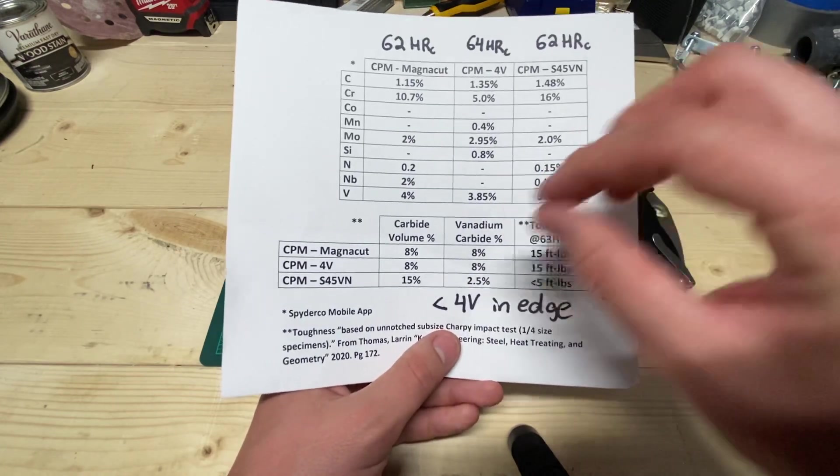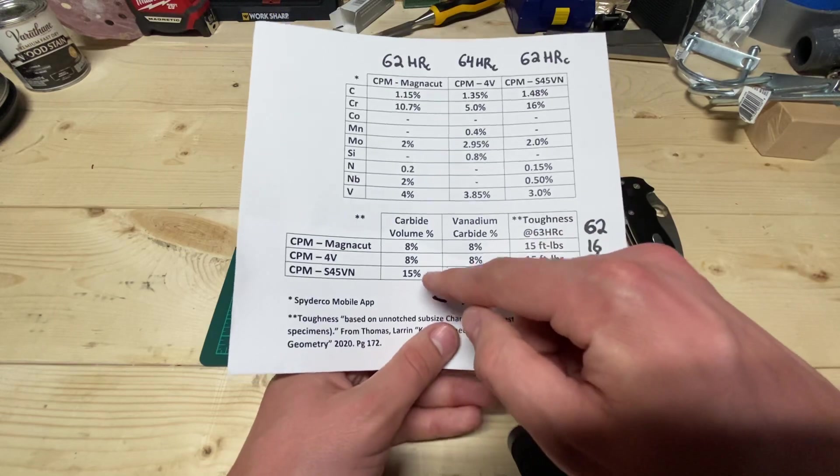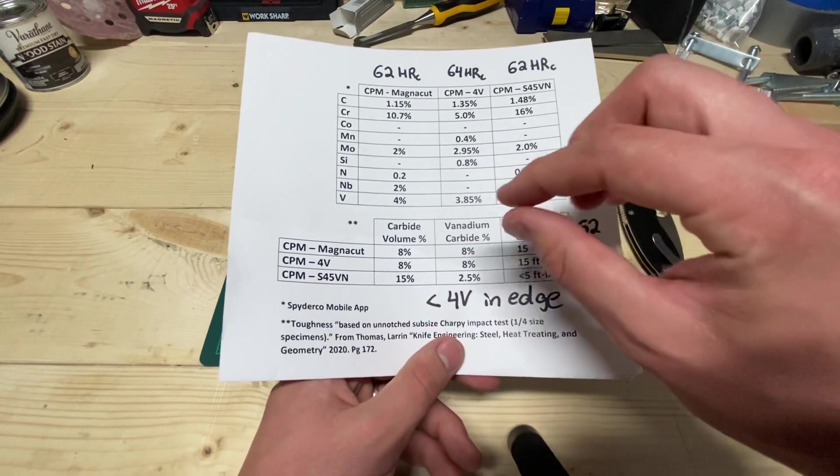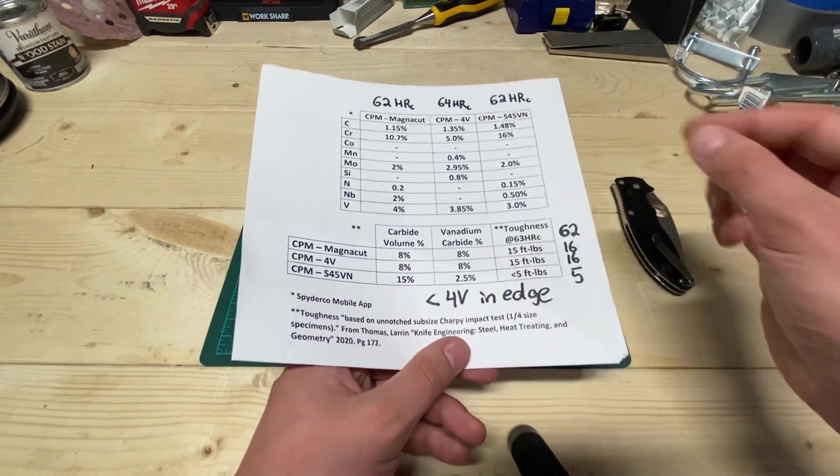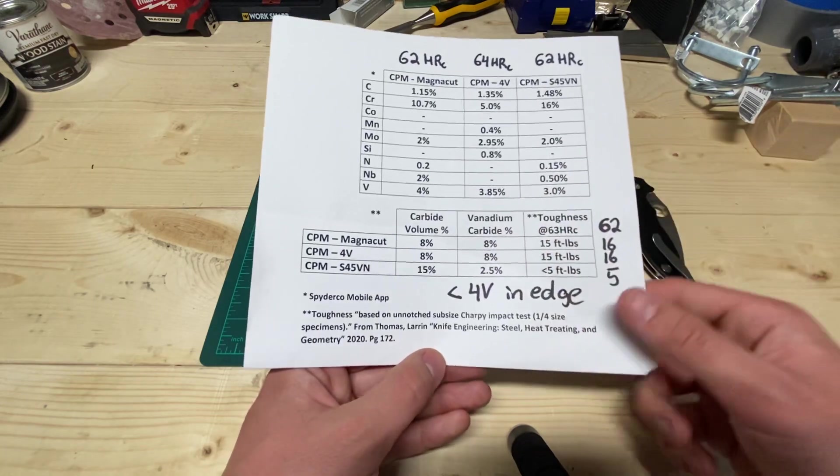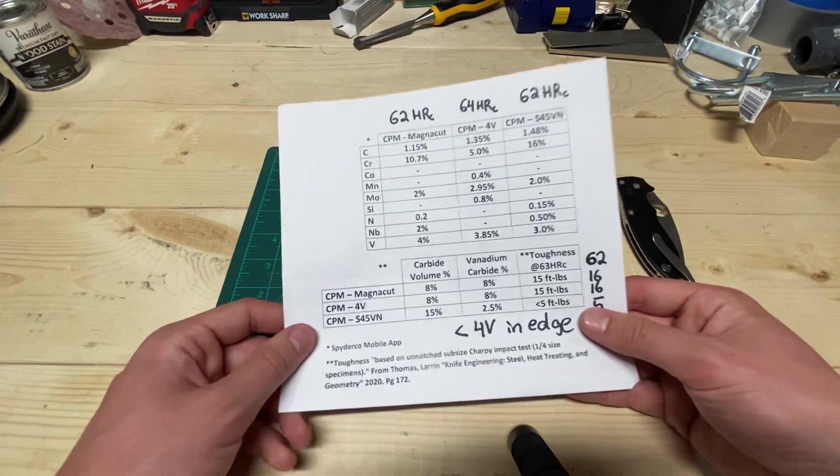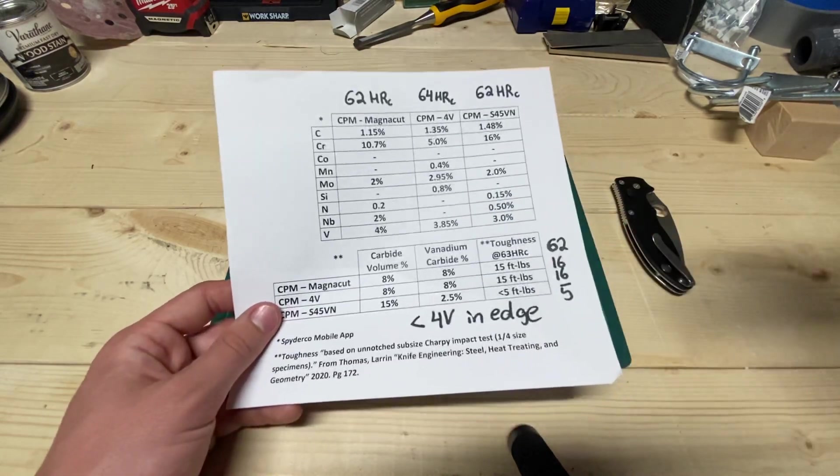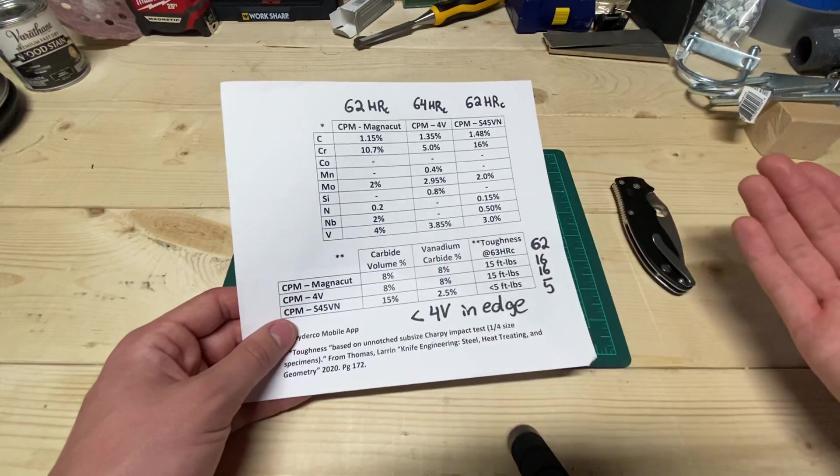There's definitely a difference, especially in the way that it's going to break down, I'm guessing. But your edge retention, this 8% goes farther than this 15%, like per unit. So it's very efficient in its carbides MagnaCut is. So that's really the beauty of it, is you get the most out of your carbides. You get stainlessness with no drawbacks.